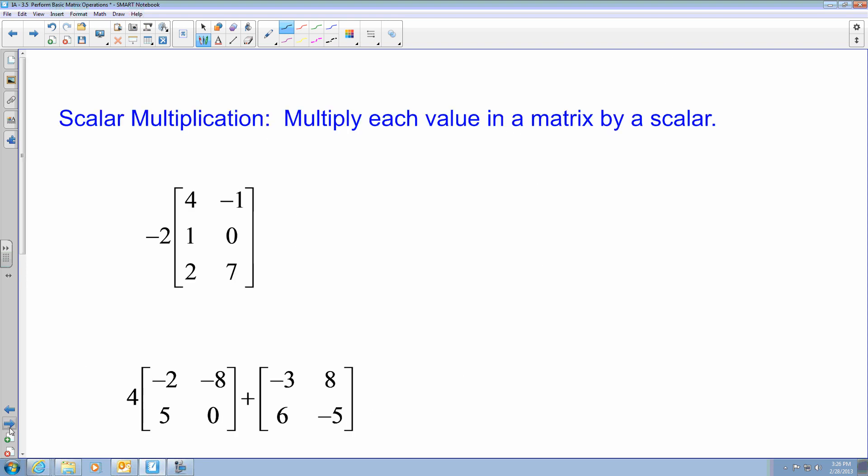Next thing that we have is called scalar multiplication. This is where we multiply each value in a matrix by a scalar. So here is our scalar, which is negative 2. And what we are going to do is we are going to multiply negative 2 to each value of our matrix. So I am going to take negative 2 in here and bring it to all of them. So I am going to say that this is negative 8, positive 2, negative 1, 0, negative 4, and negative 14.